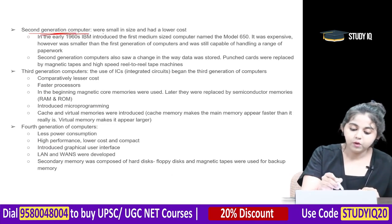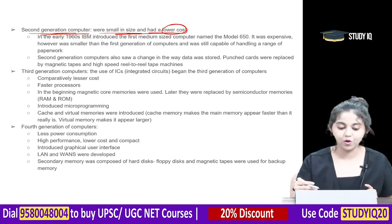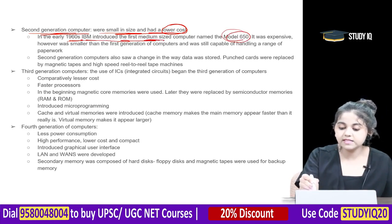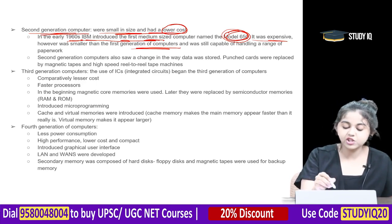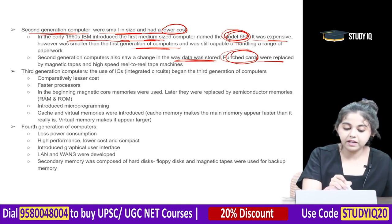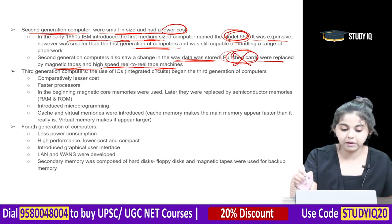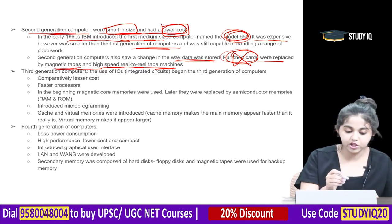Second generation computers were small in size and had lower cost. In the early period, IBM introduced the first medium-sized computer named Model 650. It was smaller than first generation computers and capable of handling a range of paperwork. Punch cards were replaced by magnetic tapes and high-speed reel-to-reel tape machines.